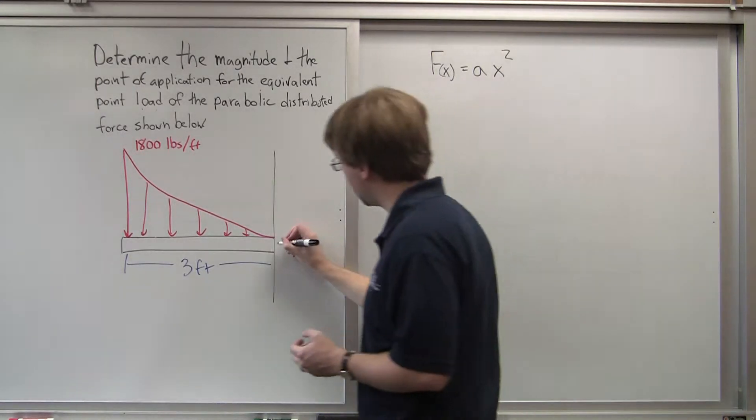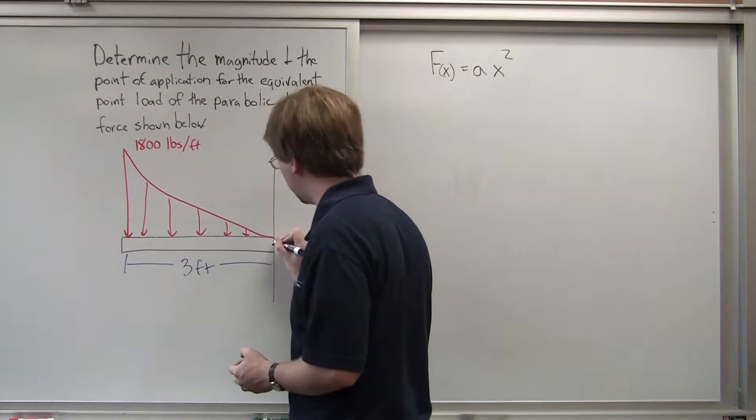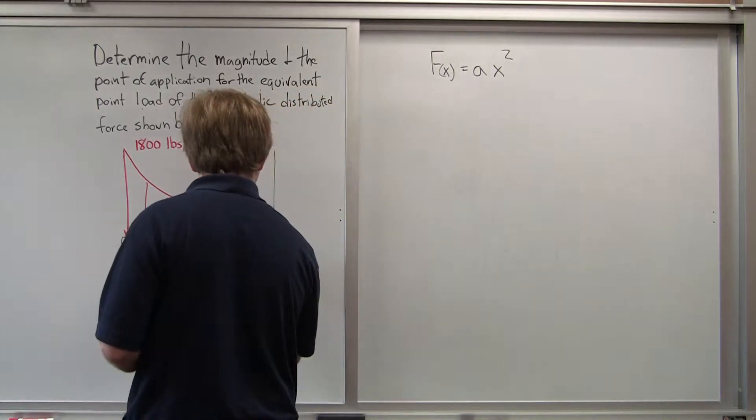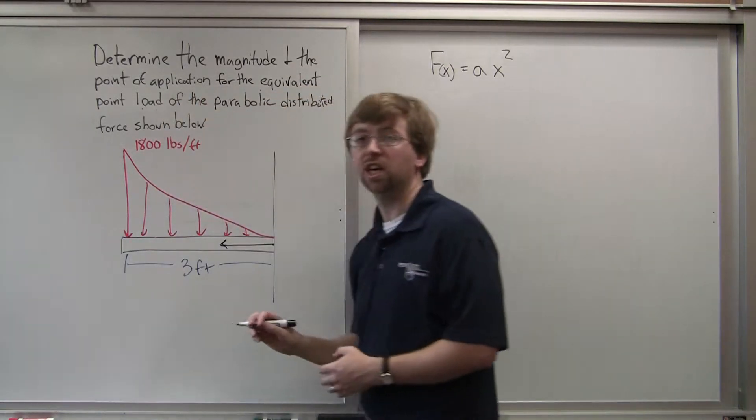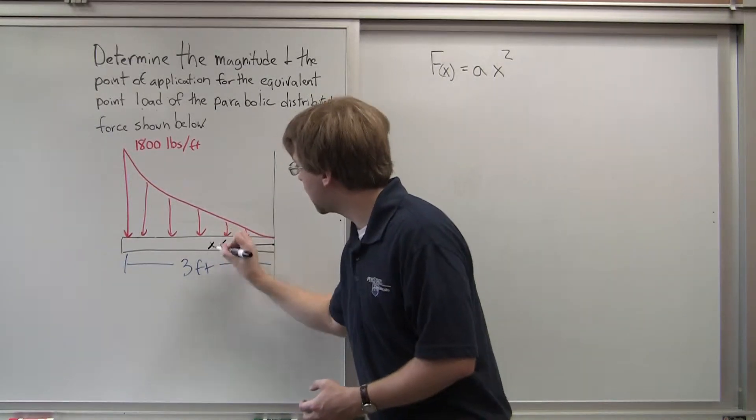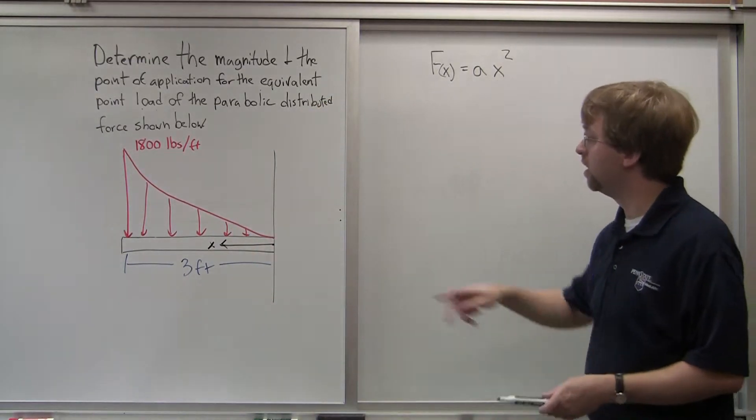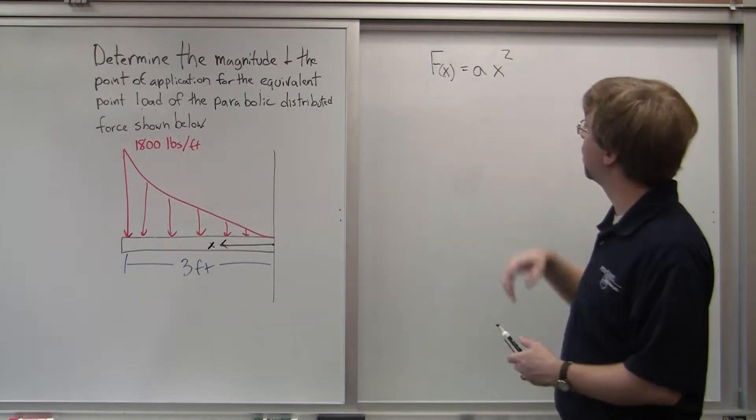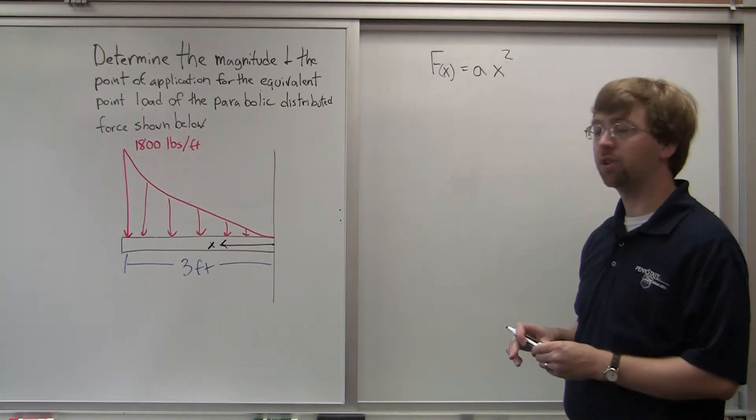And if I'm careful, I can go ahead and determine this is zero and positive x is actually going to be going to the left like that. So if I do that, if I define it that way, my intercept is zero, so I just have to solve for this one thing.